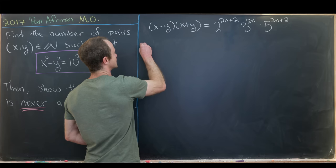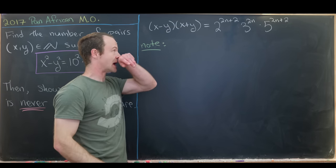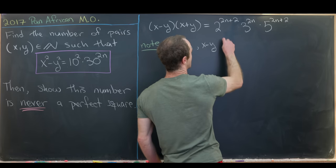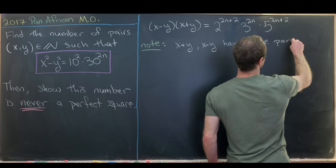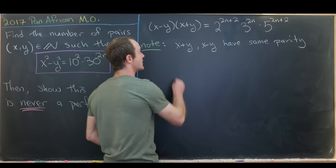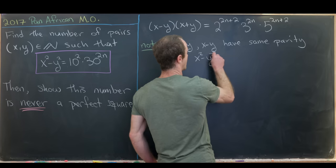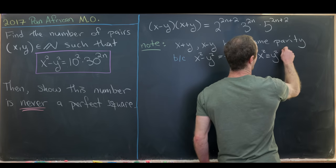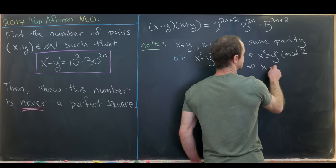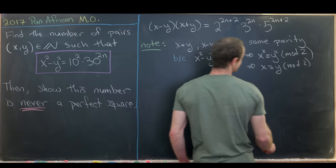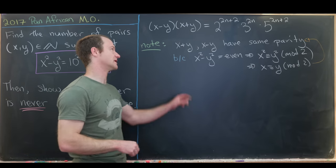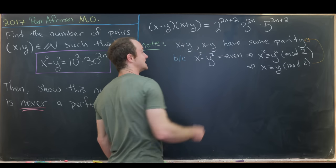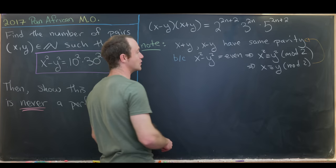The first key observation is that x minus y and x plus y have the same parity. We know this because x squared minus y squared is even, which means x squared is congruent to y squared mod 2, so x is congruent to y mod 2 — they have the same parity. Furthermore, since their product is even, they must both be even.